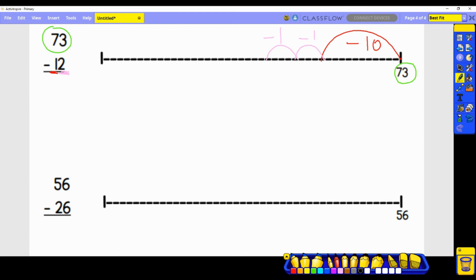We started at 73. This jump back 10 places makes this 63. The next jump, 62. And the last jump, 61. So 73 minus 12 equals 61.